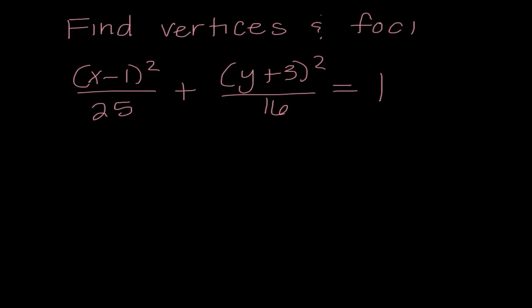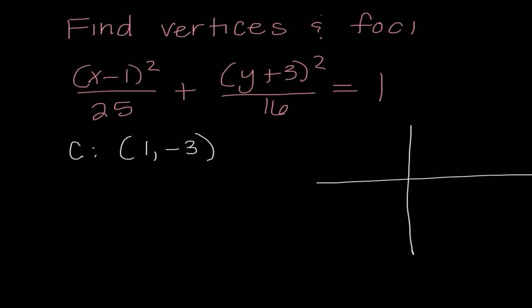This problem has an ellipse — I can tell because it's addition, both variables are squared, and they have different coefficients. It's already in the correct form, and we need to find the vertices and foci. First I find the center, which is (1, negative 3), by taking the opposites of the values inside the parentheses.